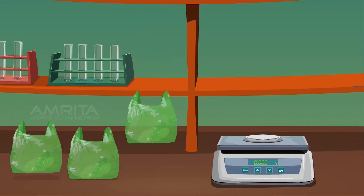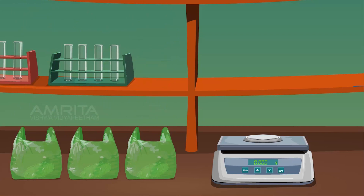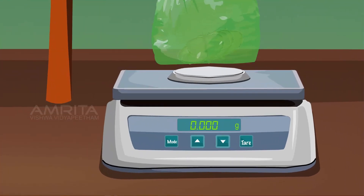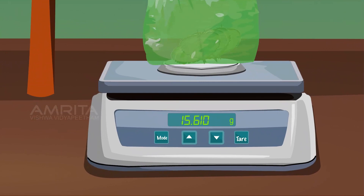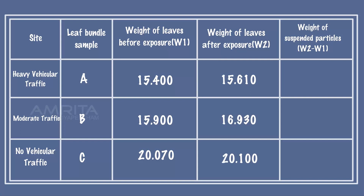At the end of the experiment, return to the laboratory. Re-weigh each bundle of exposed leaves along with their respective polythene covers and record the values in the table. The weight of suspended particles can be calculated by the difference between the weight of leaves after exposure and the weight of leaves before exposure.